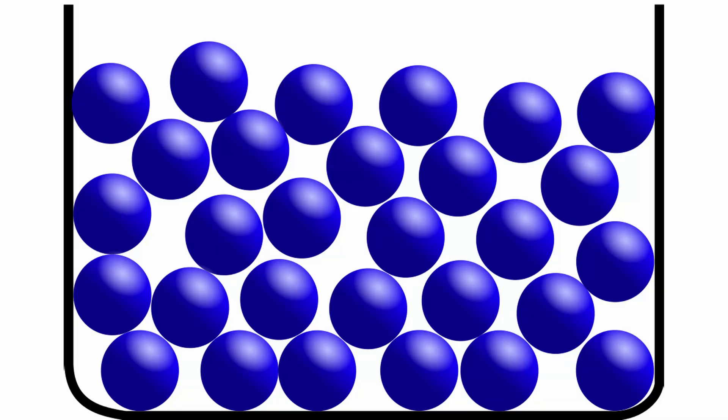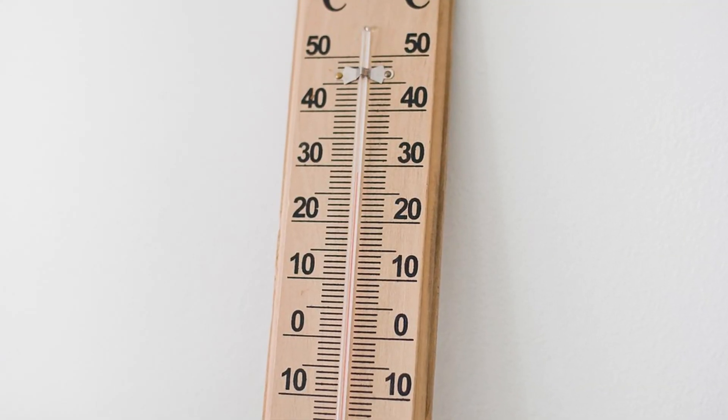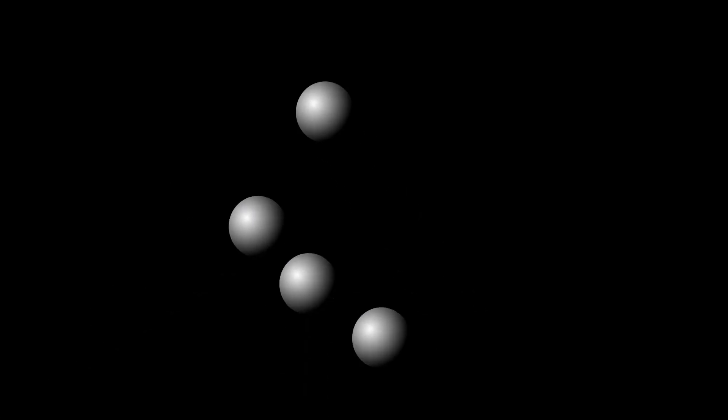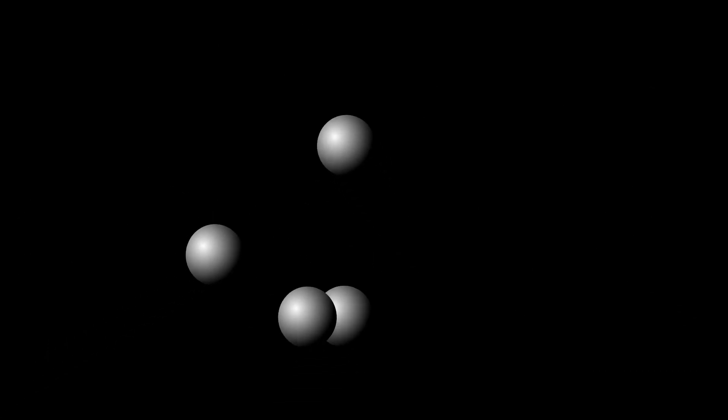To explain evaporation we first need to consider a liquid and what we mean by the temperature of it. Temperature can be thought of as the average energy of the particles in a substance, or simply the average of the speeds of the particles. Liquids and gases with higher temperatures have their particles traveling at higher velocities, while liquids and gases with lower temperatures are made up of slower moving particles.